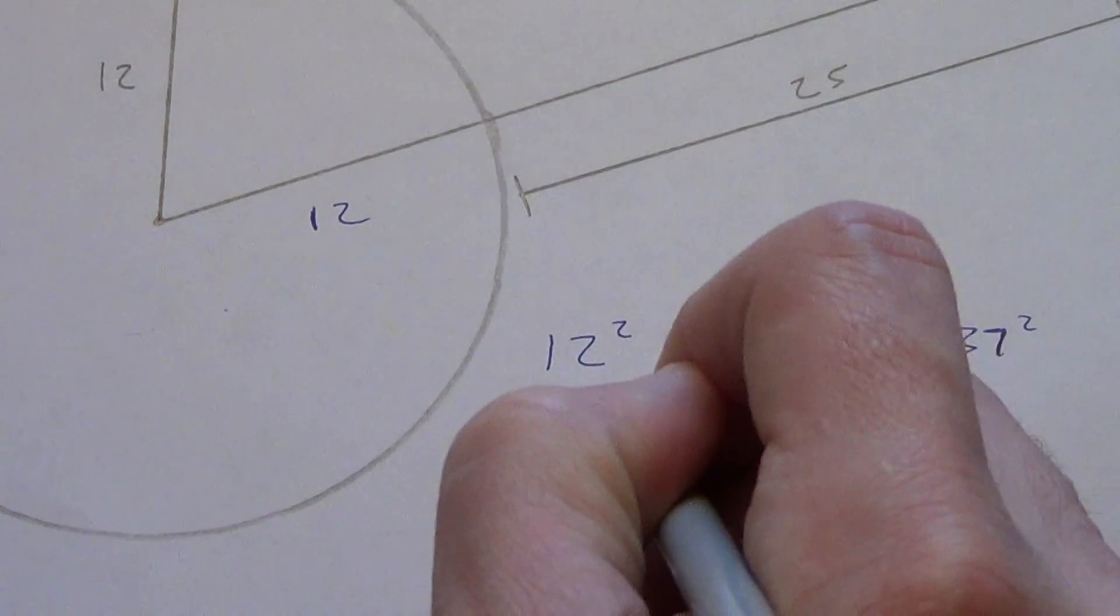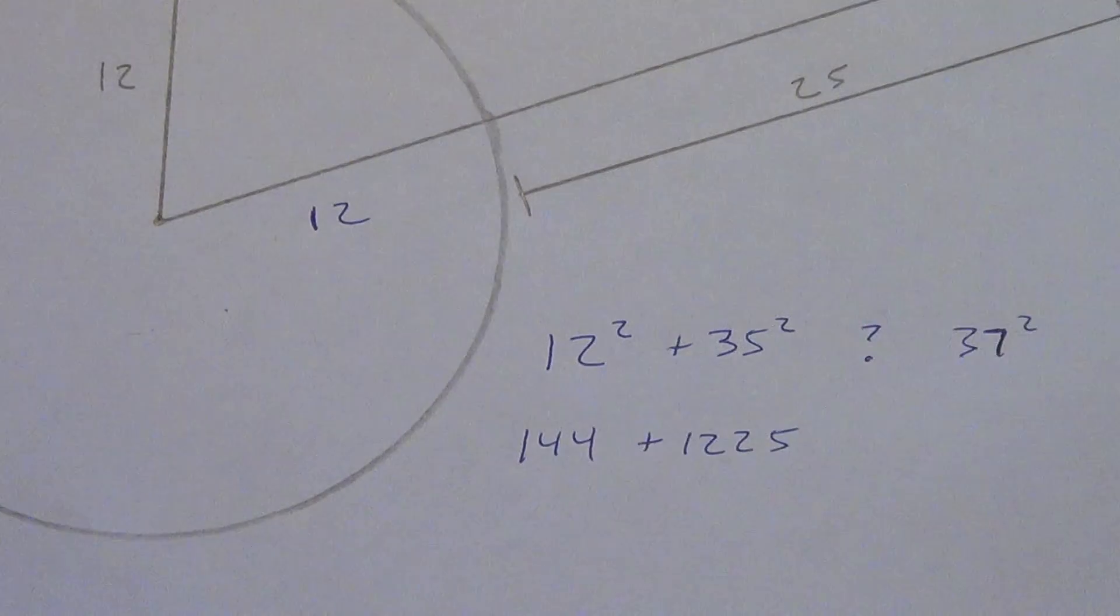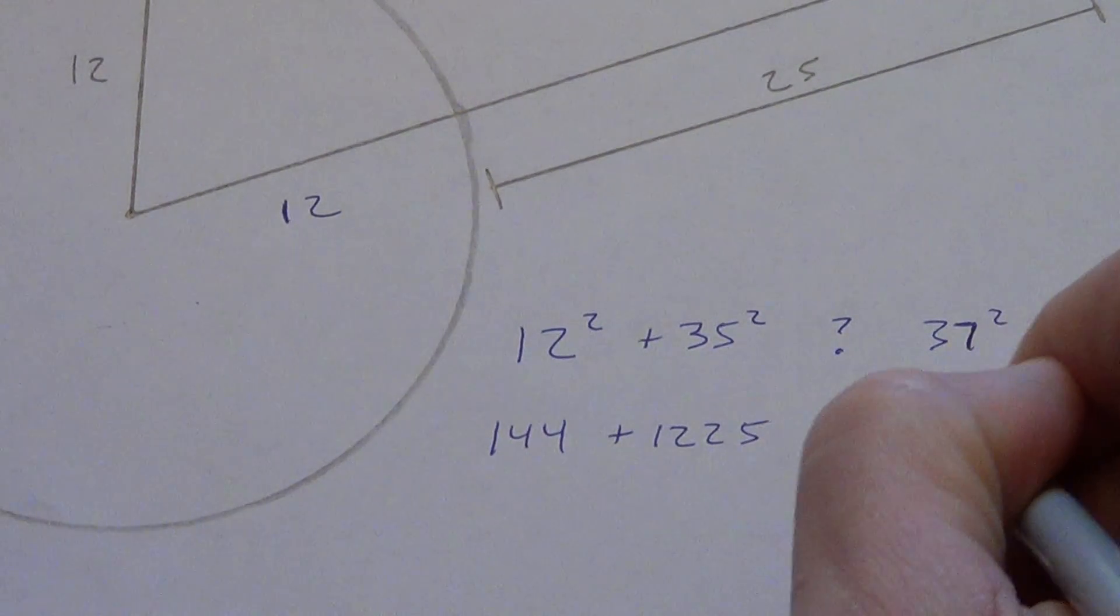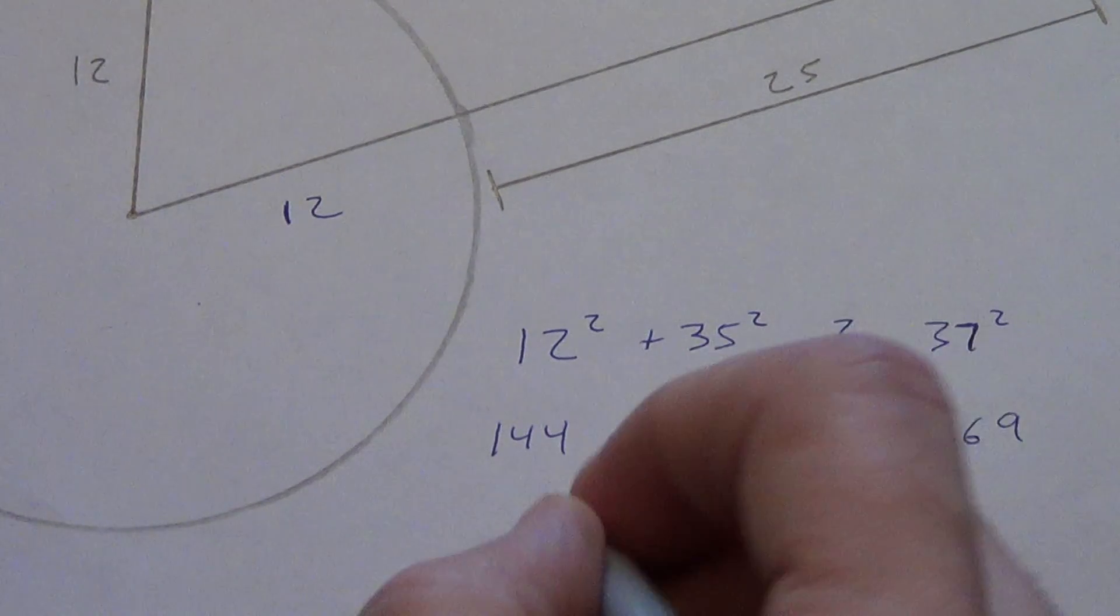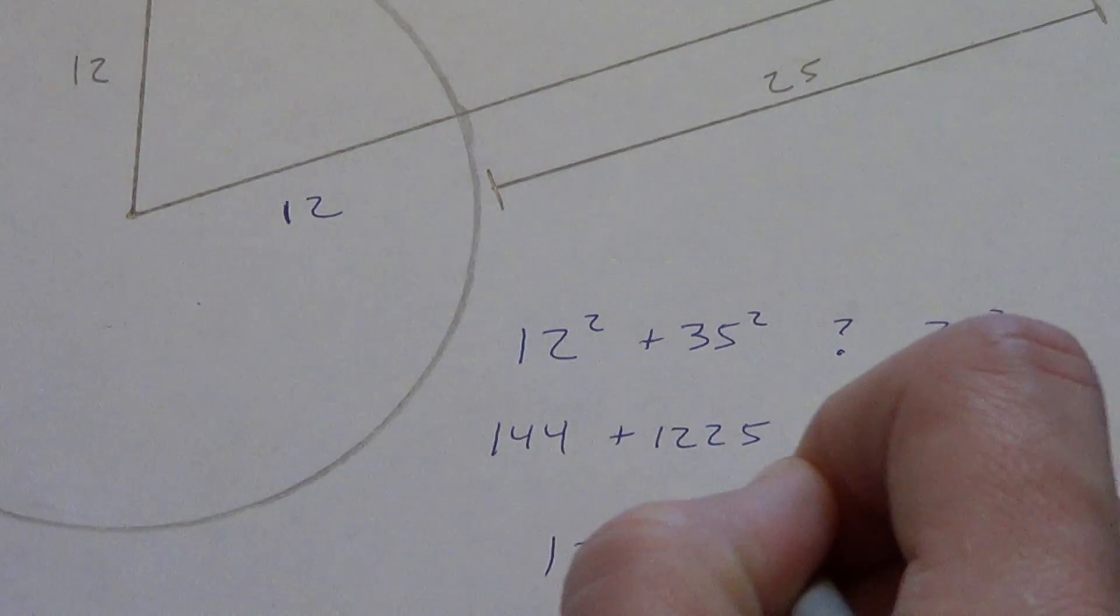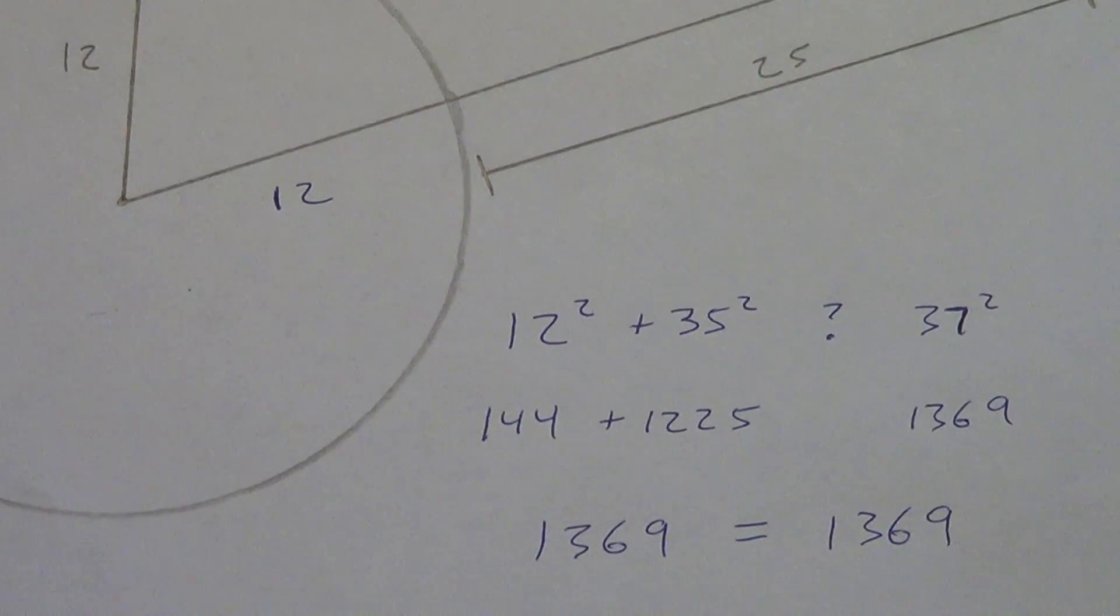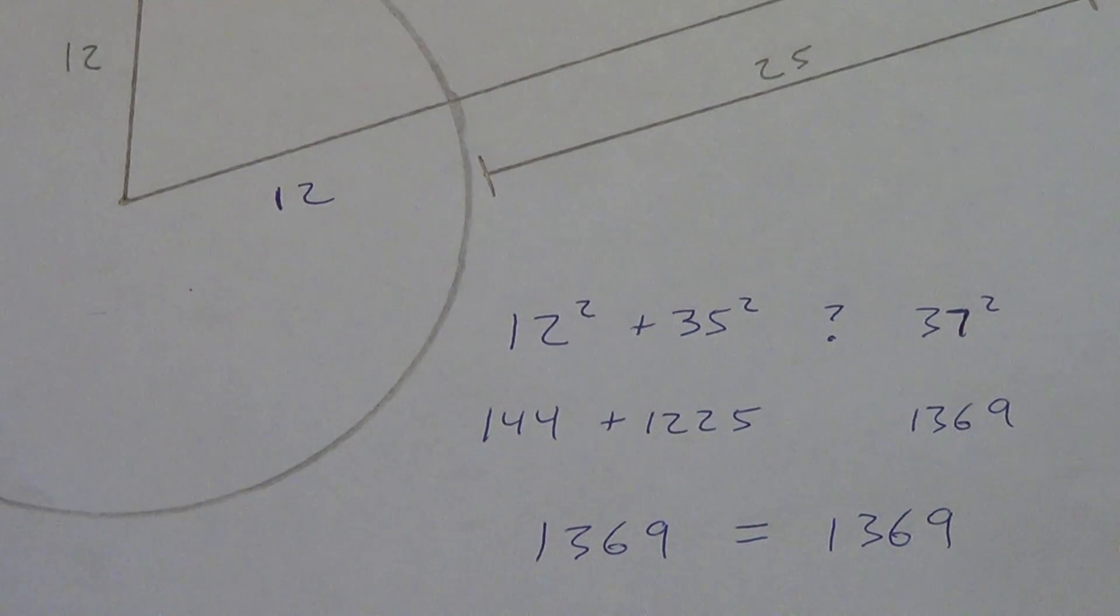So, let's do some math. 12 squared, 144. 35 squared. What is that? 1,225. 37 squared. 1,369. Let's add these. Looks like a 9 and a 6 and a 3 and a 1. 1,369. 1,369. And an equal sign. So, yes, it's a right angle. So, yes, it's a right triangle. So, yes, it's a tangent line.